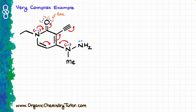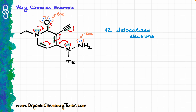The electrons on the middle nitrogen can be used in resonance as well, because I can push them towards the double bond and have them run around the molecule. However, the electrons on the last nitrogen are localized — like those on the oxygen — because that nitrogen does not have an empty orbital or a pi bond nearby. Counting all my delocalized electrons: two on the nitrogen, two on the carbon-oxygen double bond, two on one pi bond, two on another pi bond, two from the triple bond, and two on the middle nitrogen — giving a grand total of 12 delocalized electrons.